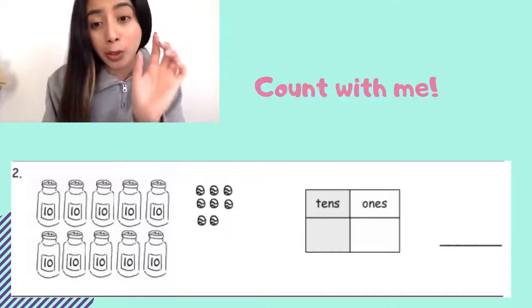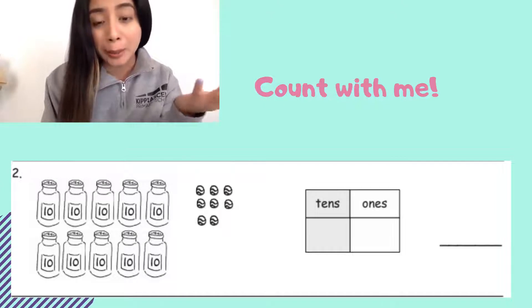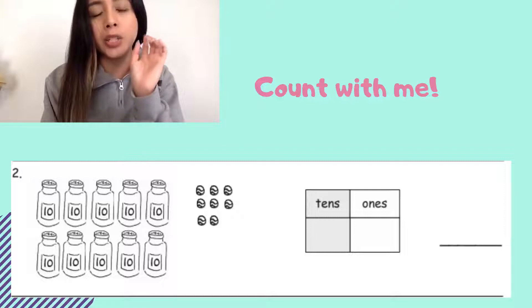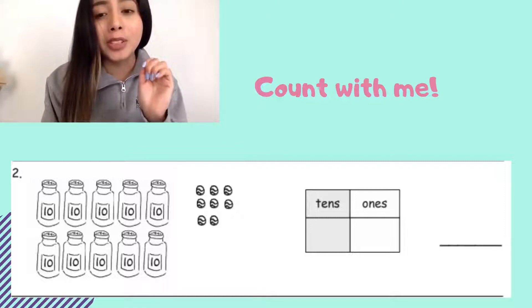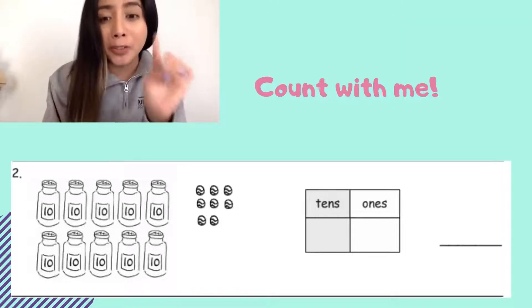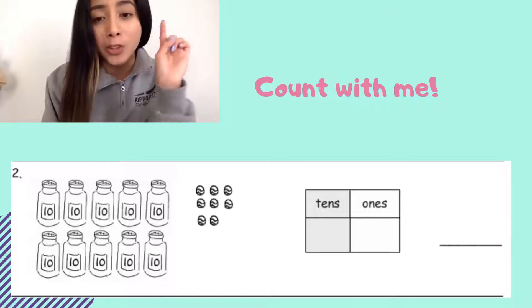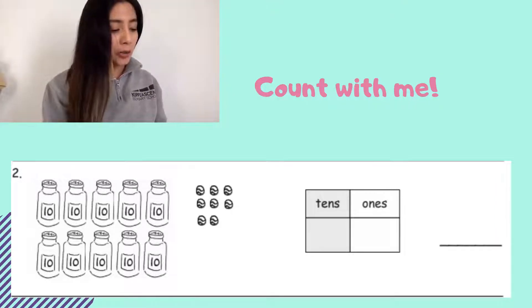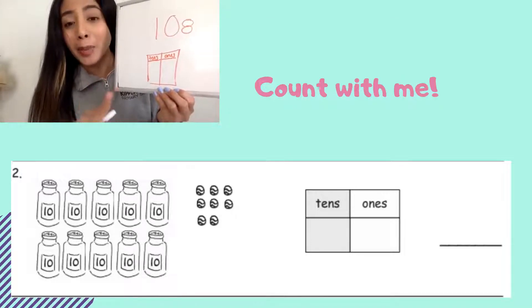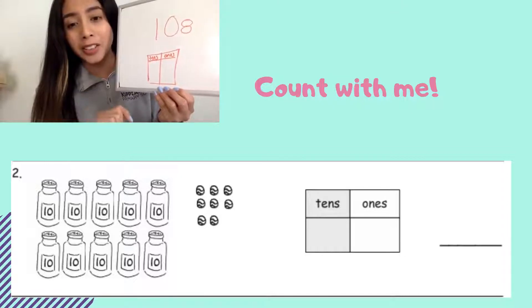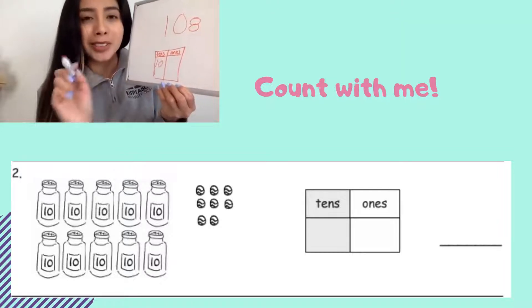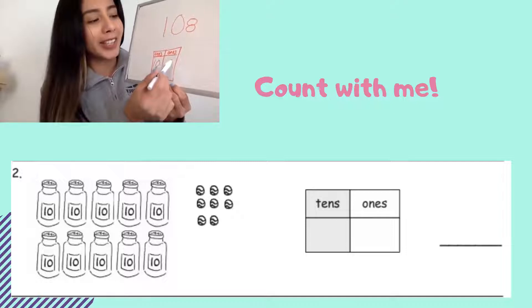And now if you look at those little marbles that are there, we can't continue counting by 10s anymore because we only have just those ones. We left off at 100 and now we can count by ones: 101, 102, 103, 104, 105, 106, 107, 108. How many 10s are in 108? We counted 10 jars of 10, and we counted 8 ones.